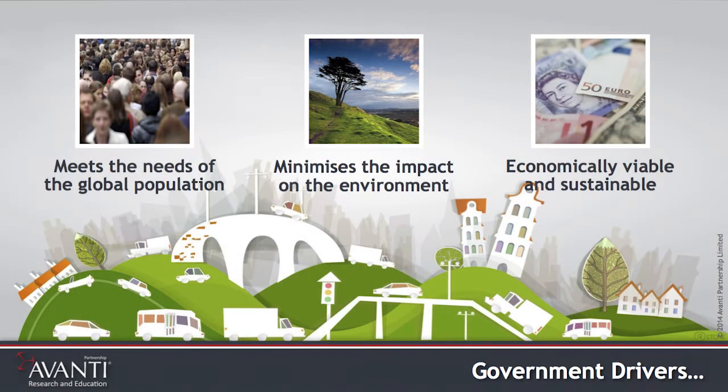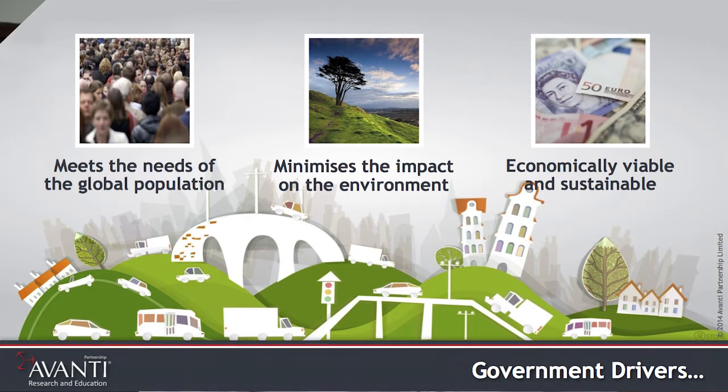So what are the effects to meet the global population? That's going to need more roads, more infrastructure, more hospitals, more schools. It's going to take a greater toll on the environment — we're going to need more land, water, etc., and we need to minimise the impact on the environment. Throughout all of this, we need economic viability and sustainability as we move forward. We have to try to manage all three of these as one set of requirements.